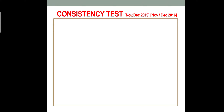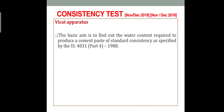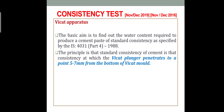The consistency test is done using a Vicat Apparatus — V-I-C-A-T — Vicat Apparatus. The Vicat Apparatus is used to find the consistency of cement paste. By definition, it is the consistency at which the Vicat plunger penetrates to a point 5±2 mm from the bottom of the mold.